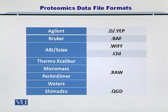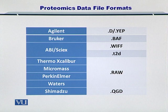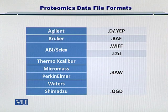Each company has its own format, as shown in this table. For instance, Agilent gives you a .d or .yep file, while Waters, Thermo Excalibur, and others give you raw file formats. All of these formats are binary formats — you cannot read them yourself by opening them in any text editor. So two key points: each manufacturer has its own data file format, and these formats are binary, meaning you need to convert them into human-legible forms.